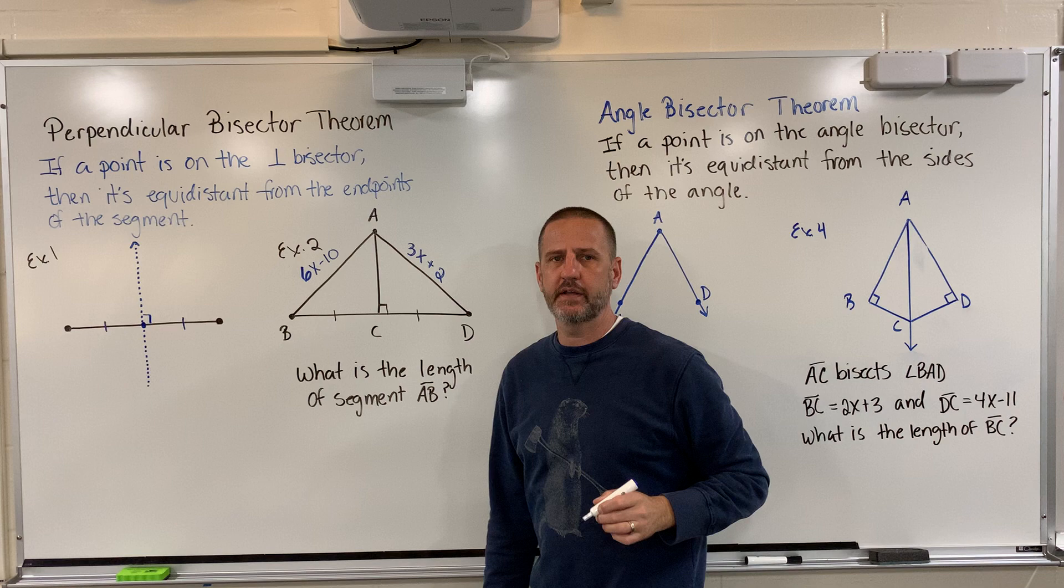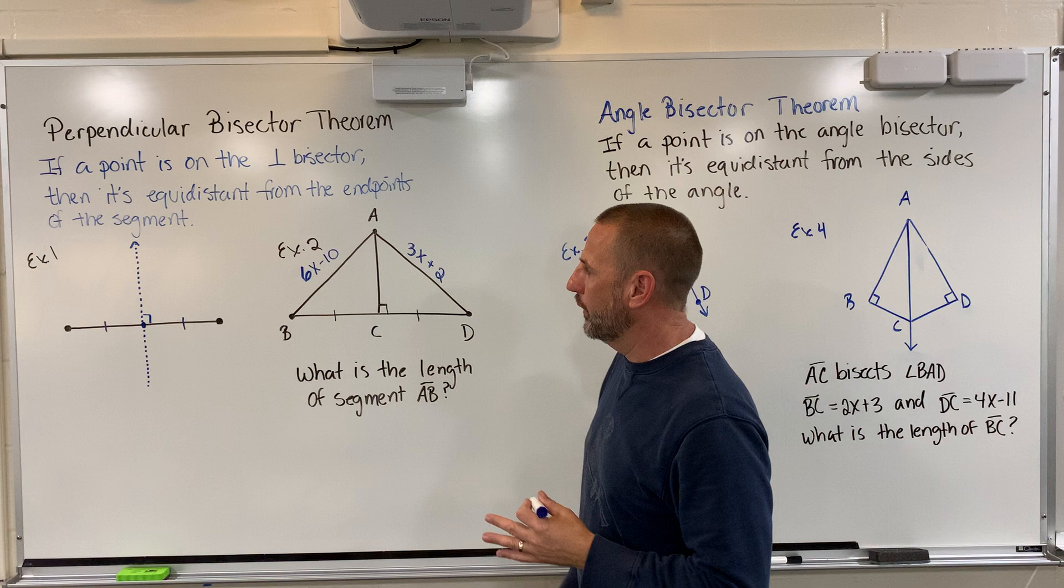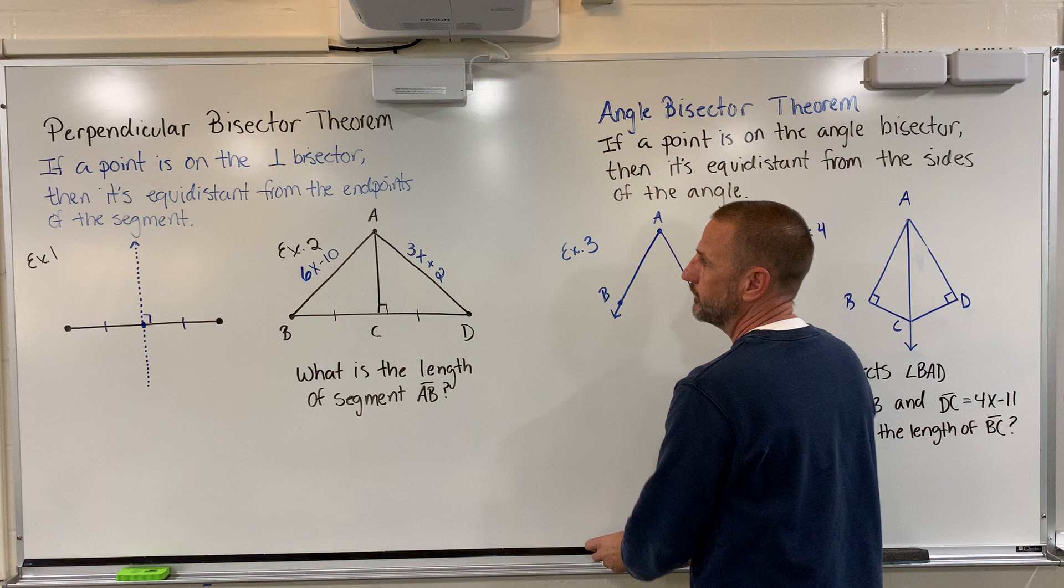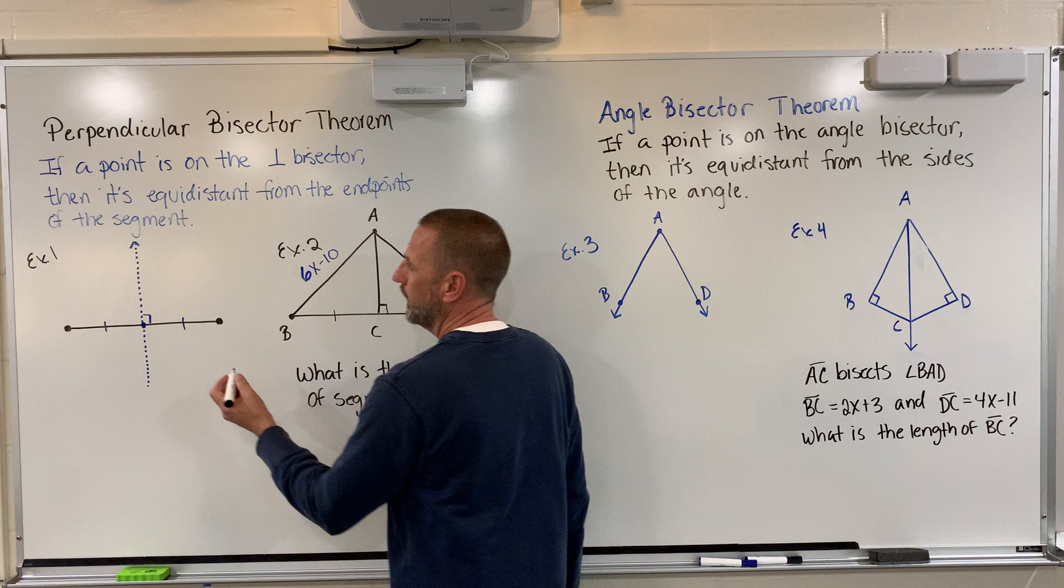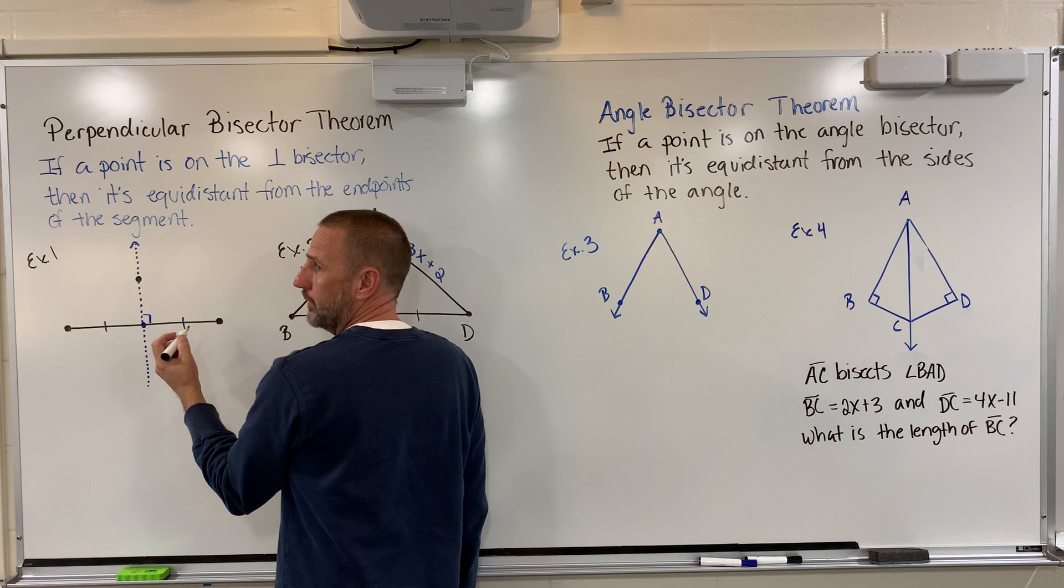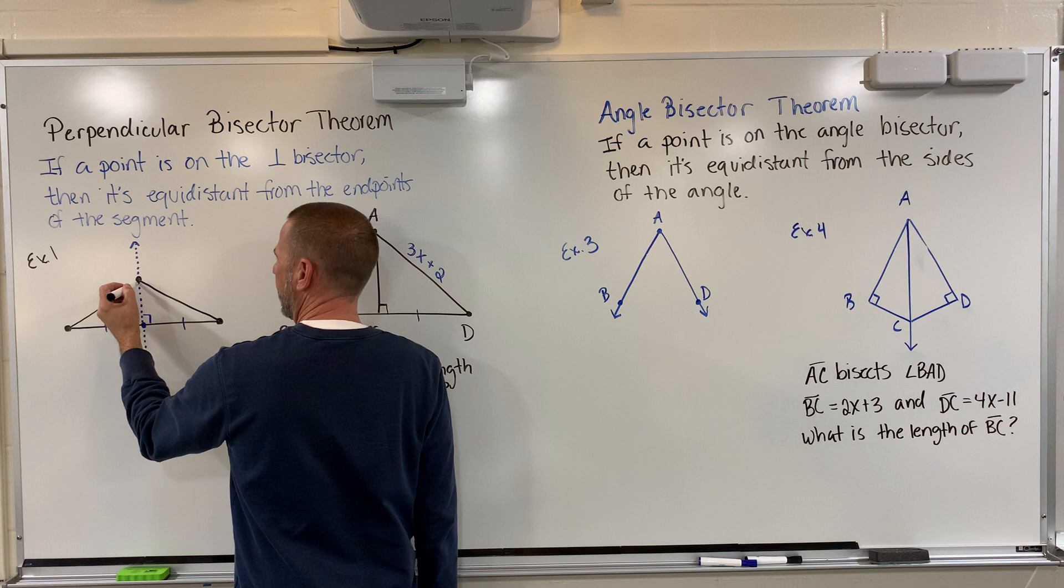So this is called a perpendicular bisector. You're going to see things like this in our text and in our assignments. What we're looking for is sides that are congruent and 90 degrees. What our theorem states is that every point along that perpendicular bisector will always be equidistant from these two points. If you imagine I just randomly drew a dot, say right here, that's telling me that this distance will be the exact same distance here.